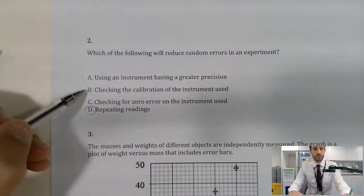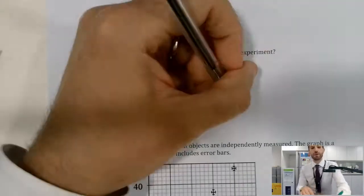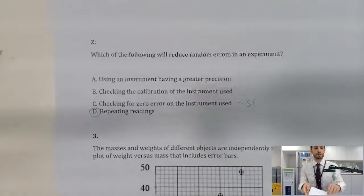Checking the calibration is more to do with checking if we are looking at a linear or a non-linear response from our instrument we're using to measure, and zero error is very much for systematic error.